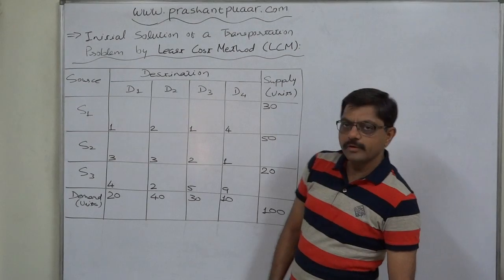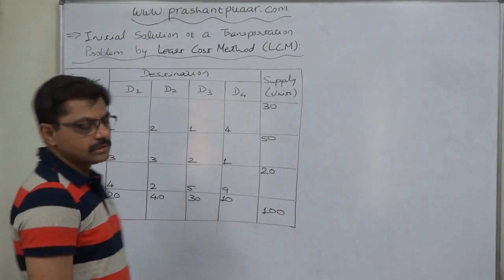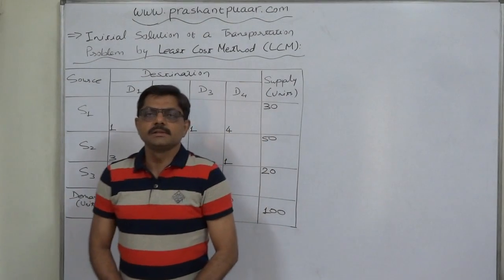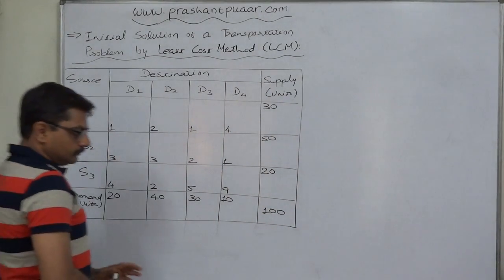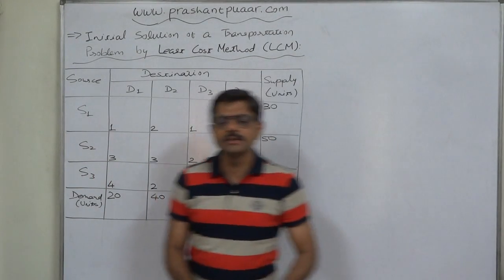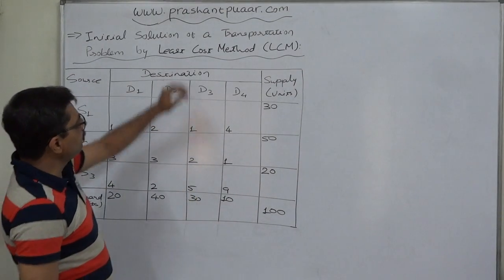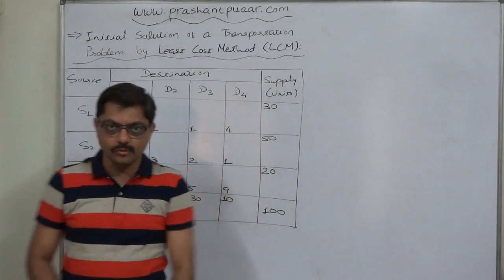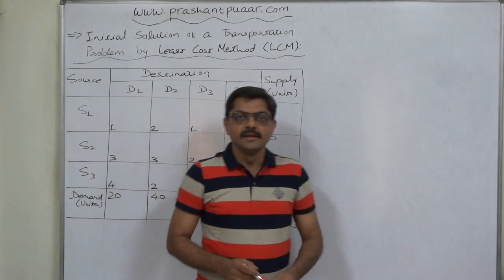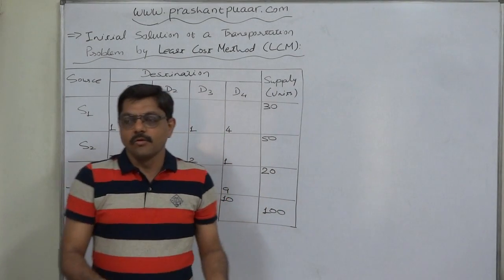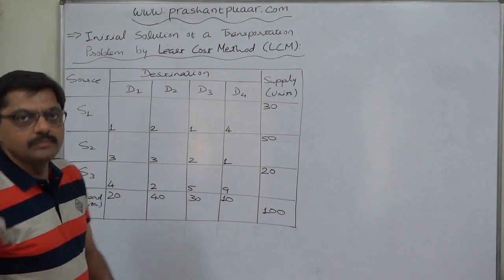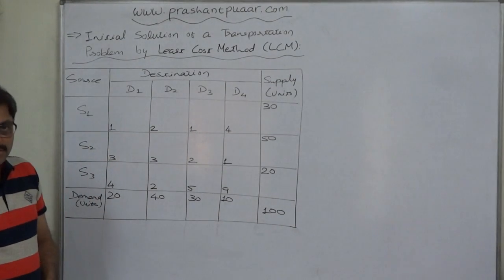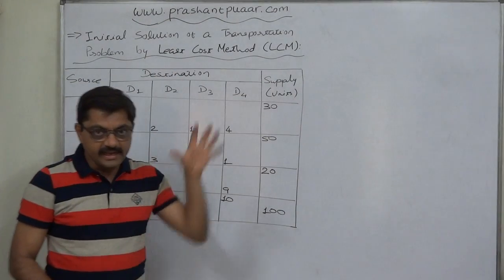Hello friends, in this session we are going to discuss the second method of getting an initial solution of a transportation problem: the least cost method. The biggest limitation of the northwest corner method was that at the time of making an allocation, we don't consider the cost. Since the objective of a transportation problem is minimization of transportation cost, not considering cost is a serious flaw. From that limitation, a new method was derived: the least cost method.